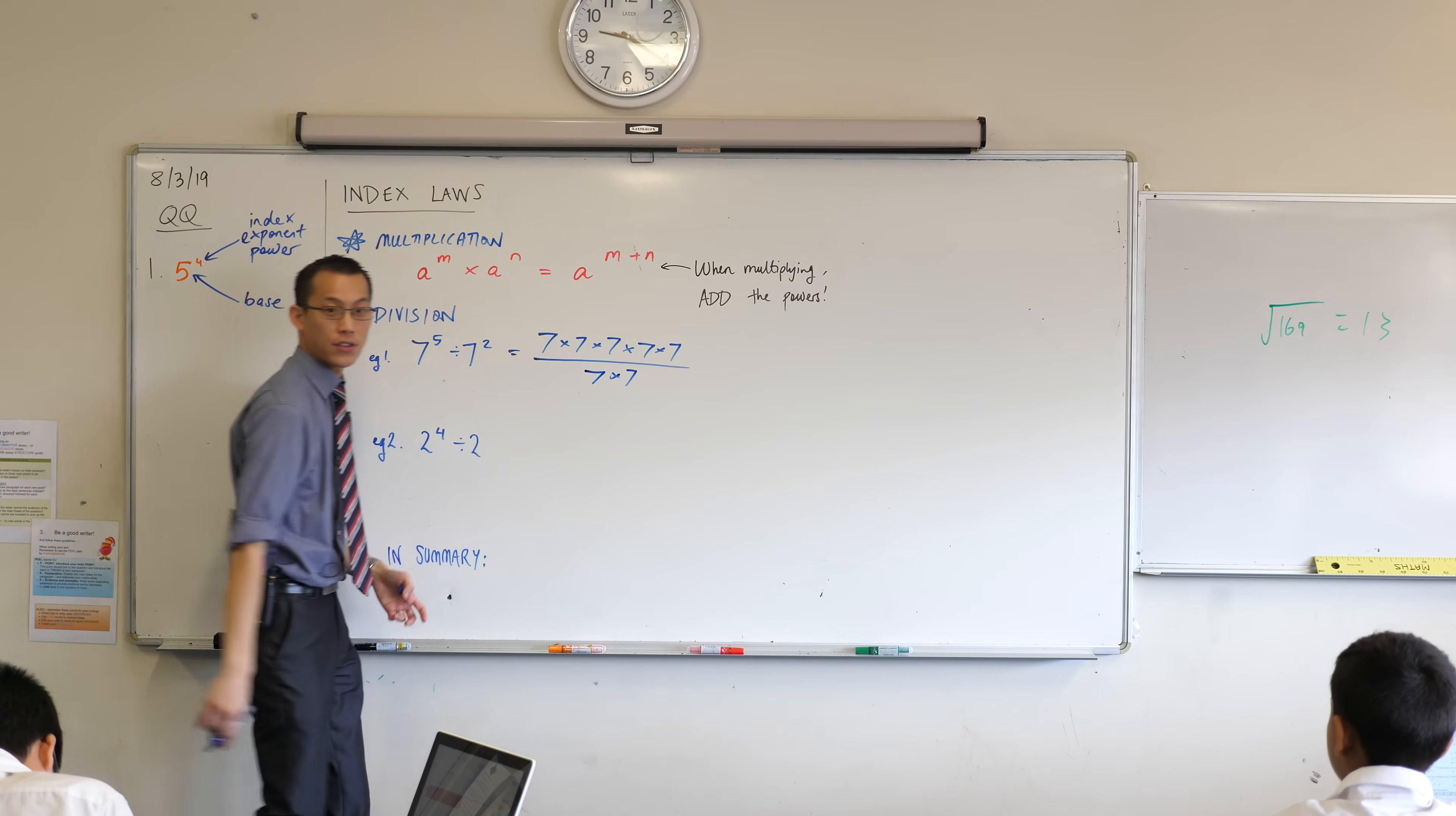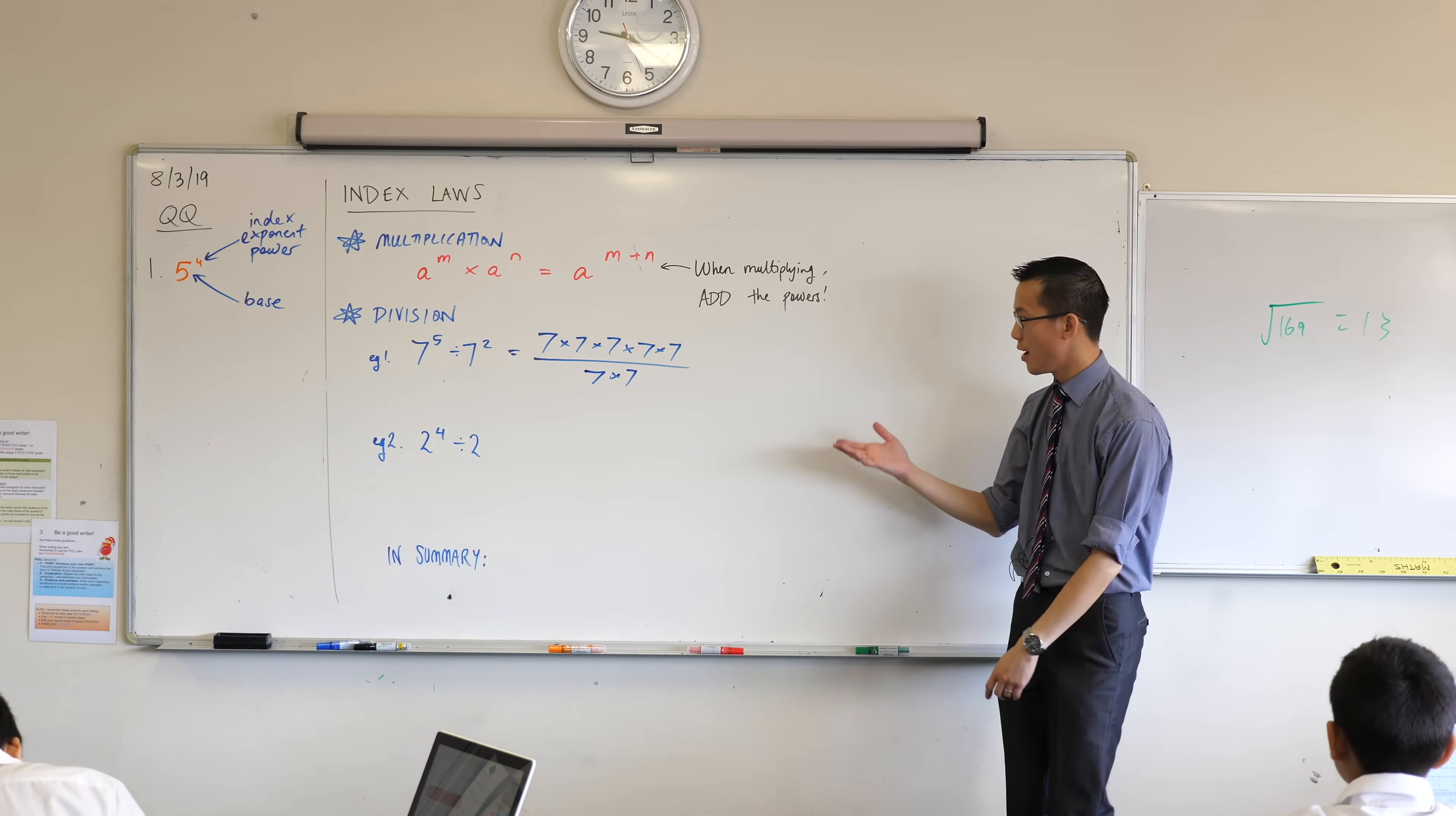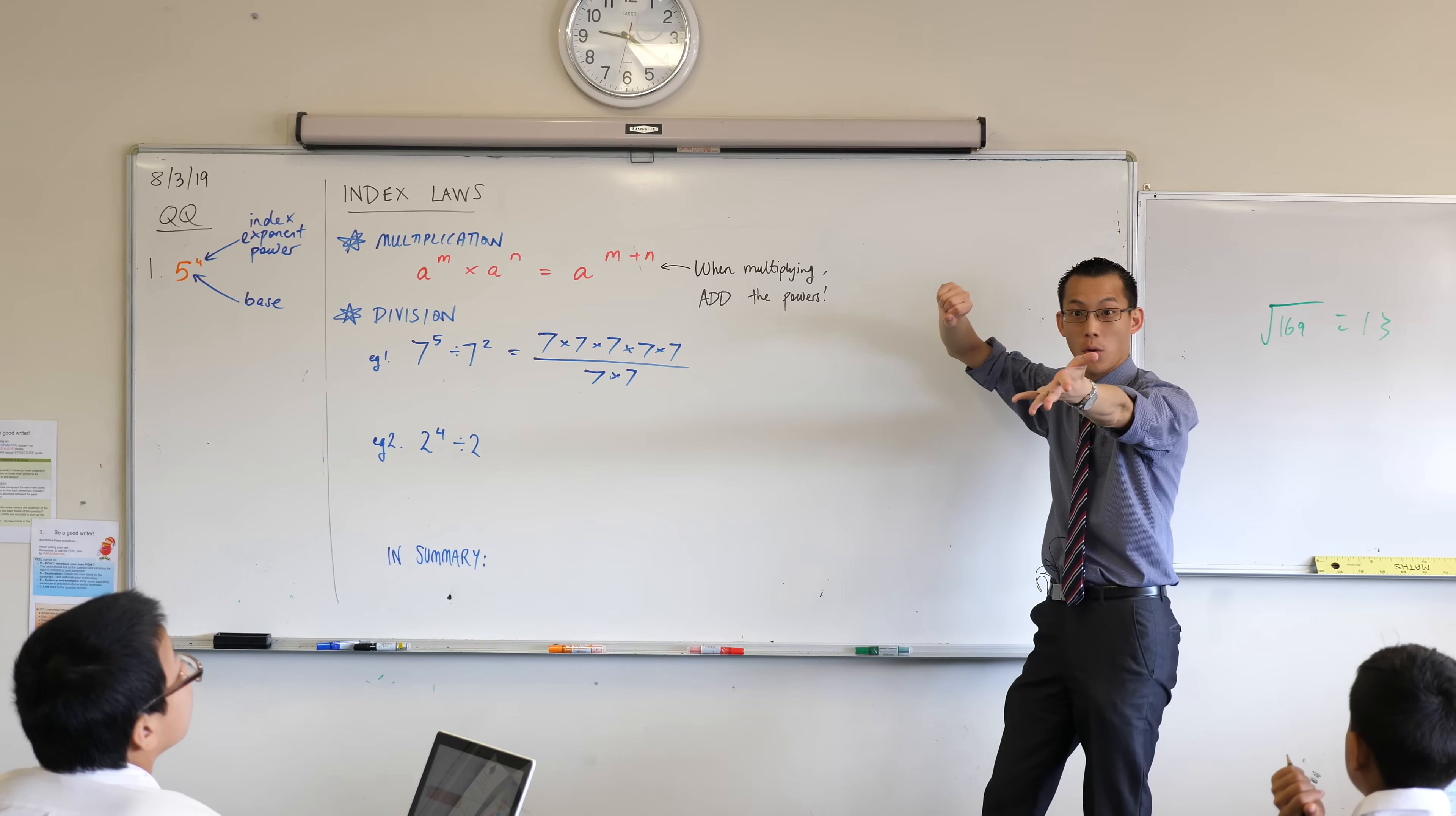7 squared. There's 7 times 7. Okay, now by this time we've been dealing with fractions for quite some time. One of the things I'm really good at is simplifying fractions—writing ones that are equivalent by looking for things on the top and the bottom that we can cancel out, that match on the top and the bottom. Okay, so what do you see there?